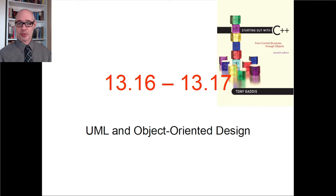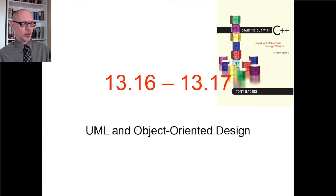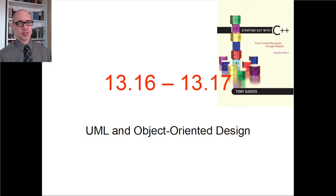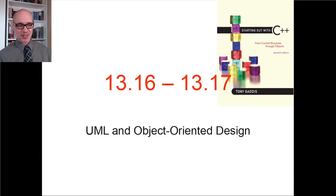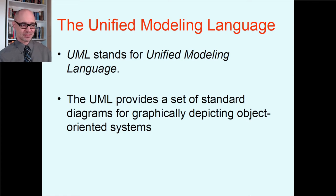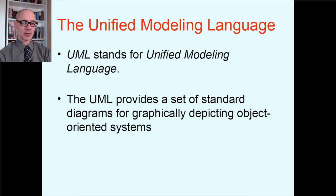It's at the end of chapter 13 in the paper book, and also in a digital appendix — Appendix E — that elaborates a little bit more. So whether you want the paper book or the digital appendix, pick whichever one you like. UML stands for the Unified Modeling Language. What UML does is provide a set of standard diagrams for graphically depicting object-oriented systems.